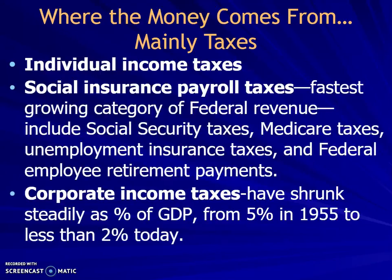When looking at individual taxes, our social insurance payroll taxes are going to be the fastest growing piece — this is Social Security, Medicare, unemployment insurance, federal employee retirement payments. You've got corporate income taxes, and those have shrunk steadily as a percentage of GDP.